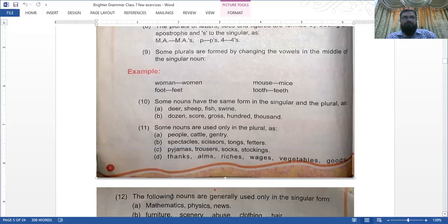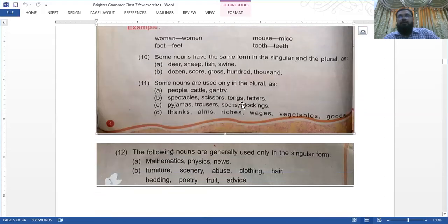Number ten: some nouns have the same form in the singular and plural. Deer/deer, sheep/sheep, fish/fish - singular and plural the same. There is an exception in biological terms: when the fish is of the same kind like shark, if it is one we say fish, when they are ten we still say fish, but when sharks and dolphins and others are mixed they will be fishes. But for this level, the plural of fish is fish. Swine/swine, dozen/dozen, score/score, gross/gross, hundred/hundred, thousand/thousand.